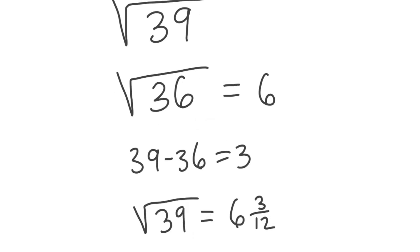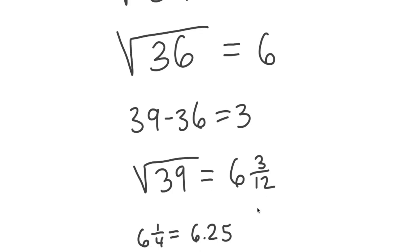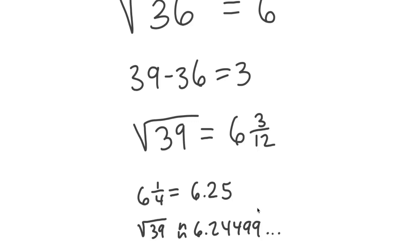Square root 39 is equivalent to the whole number value of 6 that we got up here. 3 over 12. 12 is just 6 times 2. Now this simplifies to 6 and 1 fourth, which as a decimal is 6.25. The exact value of square root 39, 6.24499. We're close again.